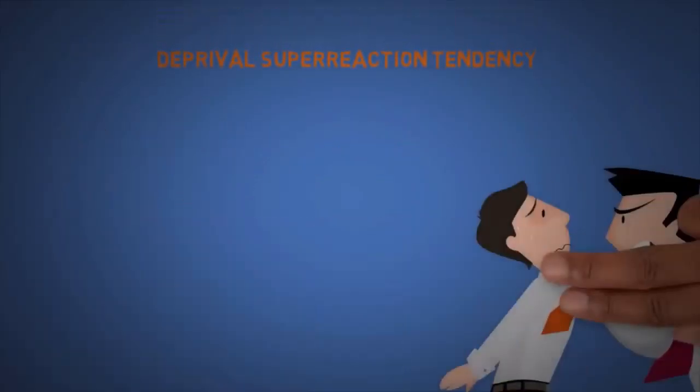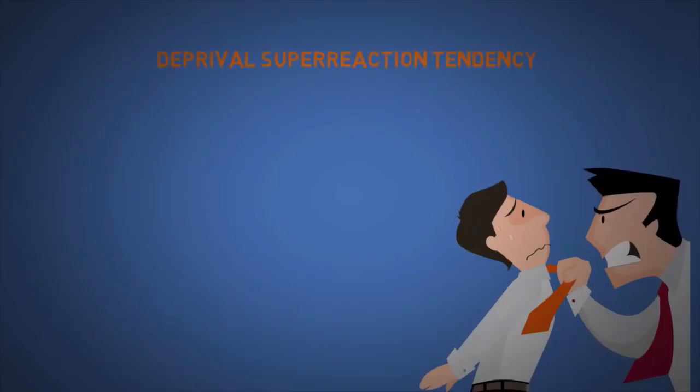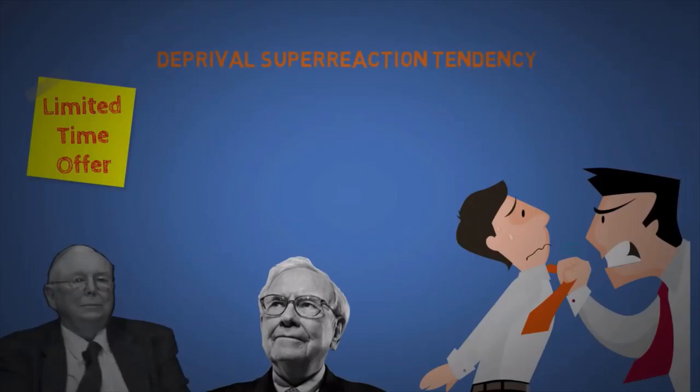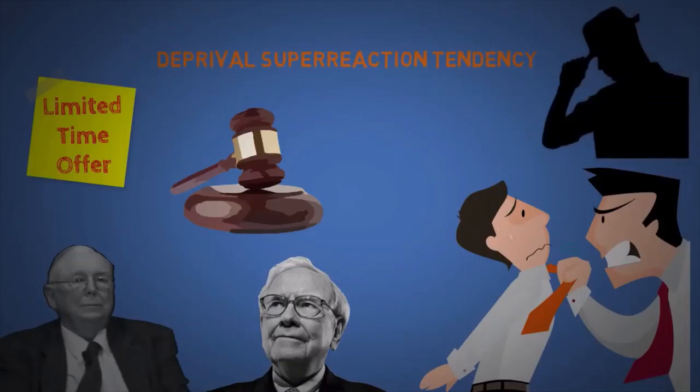The fourteenth is deprival super reaction tendency. People tend to act irrational with intensity, even to small losses sometimes. This is why limited time offers are powerful. Even Charlie Munger and Warren Buffett, two of the most successful people in this world, both hate being in auctions because they always feel like getting manipulated. Going once, going twice, sold to the man wearing the fedora hat.